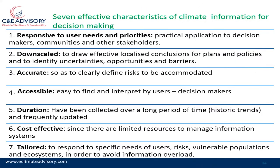There are seven effective characteristics of climate information which are very essential for decision-making. The first is that it has to be responsive to user needs and priorities - that is, it has to have practical application to decision-makers, communities, and other stakeholders. The only way it can be responsive to user needs is that it must have been co-produced. The climate information also has to be downscaled to draw effective localized conclusions for plans and policies, and to identify uncertainties, opportunities, and barriers.